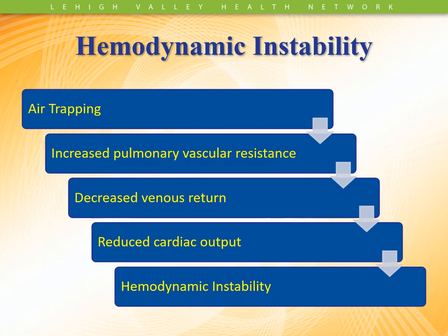You've got air trapping, increased pulmonary vascular resistance, decreased venous return, which decreases cardiac output and causes hemodynamic instability. Patients with status asthmaticus who also progress to cardiac dysfunction and decompensation obviously need to be admitted to the ICU. And you've got to be careful with positive pressure breathing because it will exacerbate air trapping if not done correctly, and even if done correctly can cause more air trapping, which will increase the amount of pleural pressure, decreasing venous return, and making things worse.